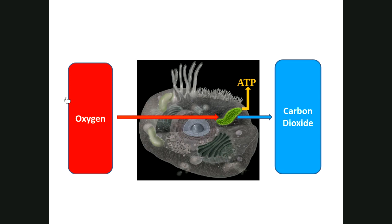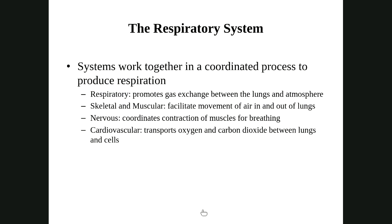Every cell needs to get oxygen. In their mitochondria, they make ATP so that cell can function properly, and then they release carbon dioxide as a byproduct. The respiratory system works together with several other systems. It's really dealing with the lungs and gas exchange, but to achieve this we're going to have to use the skeletal and muscular system to raise the rib cage and drop the diaphragm.